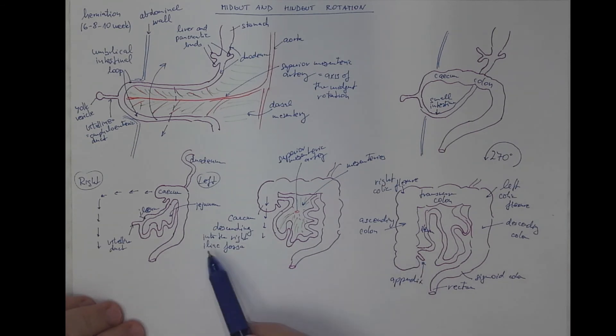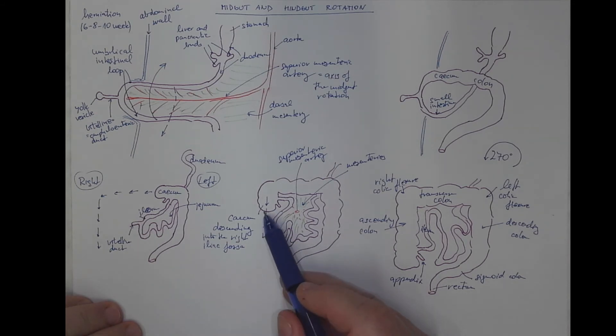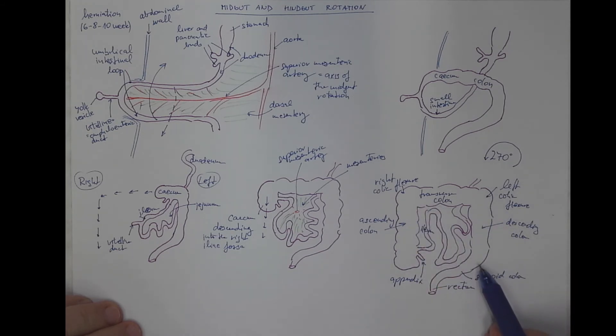And one of the reasons why do we mention that is the variability of the positions of the appendix, which is the result of this descending descensus of the cecum into the right iliac fossa. And once the colon will reach its position, the mesocolon, their dorsal mesenteries will grow together with the posterior body wall in the extent of the ascending and descending colon. While the mesenteries of the transverse colon will become loose and allow for some further movements of the transverse colon.